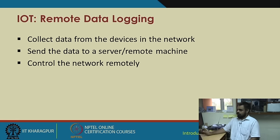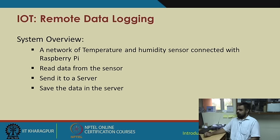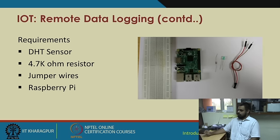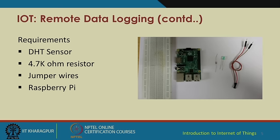The system will collect data from devices in the network, send the data to a server or remote machine, and that remote machine will control the client or data-sending device remotely. The system overview: a network of temperature and humidity sensors connected to Raspberry Pi. For demonstration we are connecting only one temperature and humidity sensor with a single Raspberry Pi. Data from the sensor is read, sent to the server over the network, and the data is saved on the server.